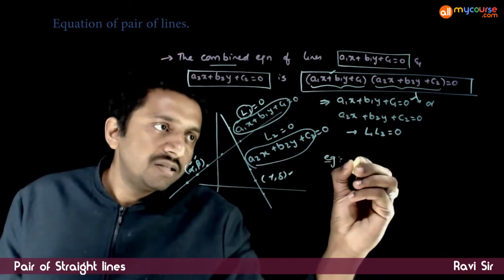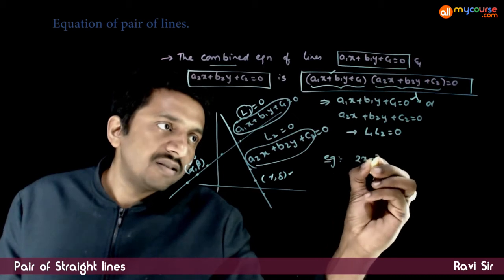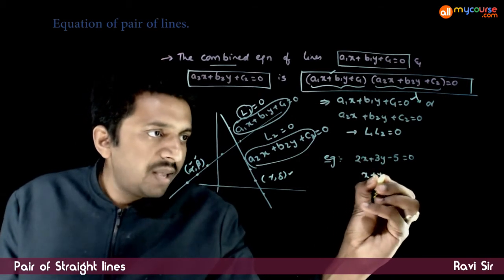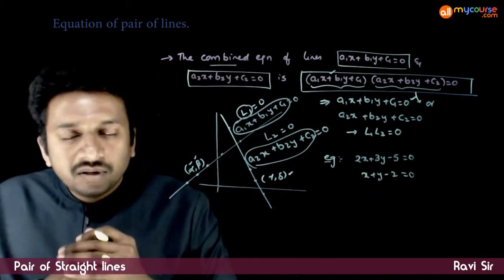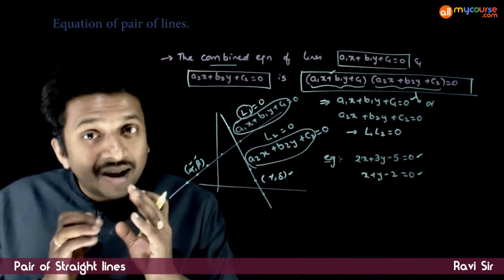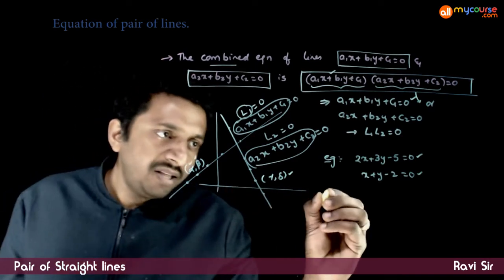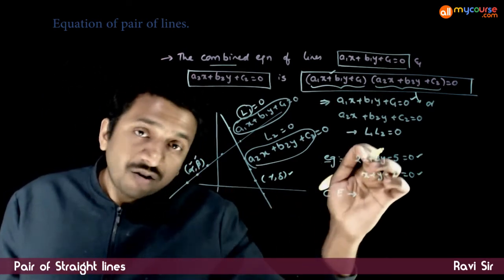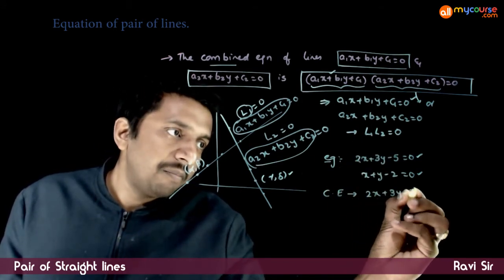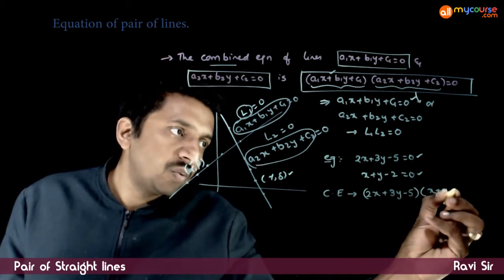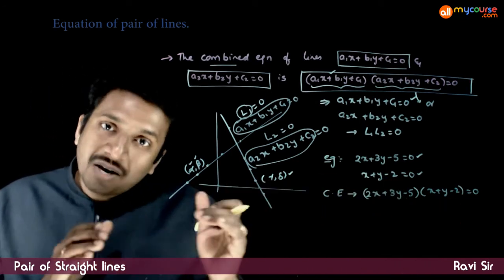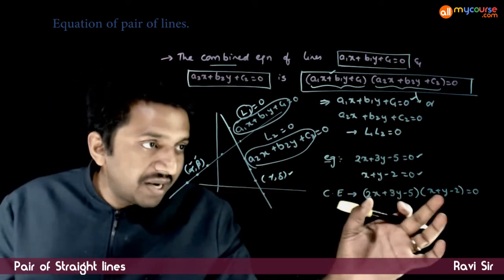For example, if you have lines 2x + 3y − 5 = 0 and x + y − 2 = 0, these are two individual lines. What is the combined equation of these two lines? It is simply: the combined equation of this pair of lines is (2x + 3y − 5)(x + y − 2) = 0. If you expand this, you get a lot of terms, so let us try to expand this.